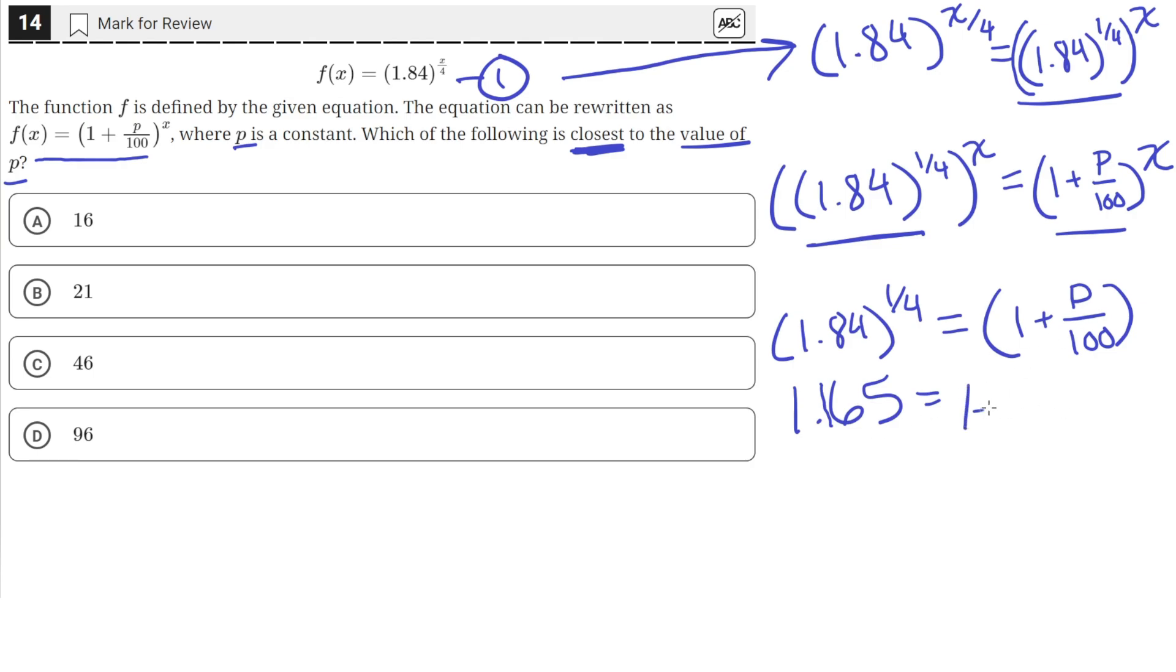Now we have 1.165 equals 1 plus p over 100. Let's isolate p by subtracting 1 from both sides. On the left we'll have 0.165, and on the right we'll have p over 100. Then multiply both sides by 100. Multiplying by 100 moves the decimal point two places to the right, so we're left with 16.5 equals p.